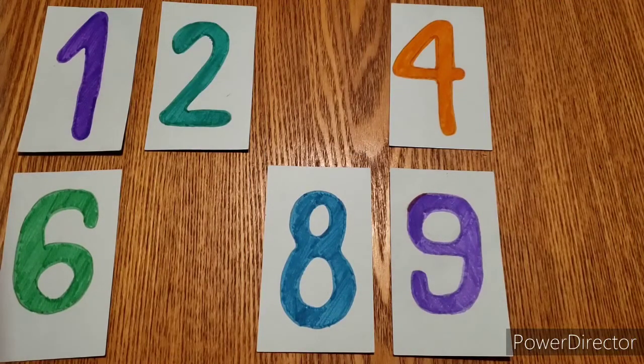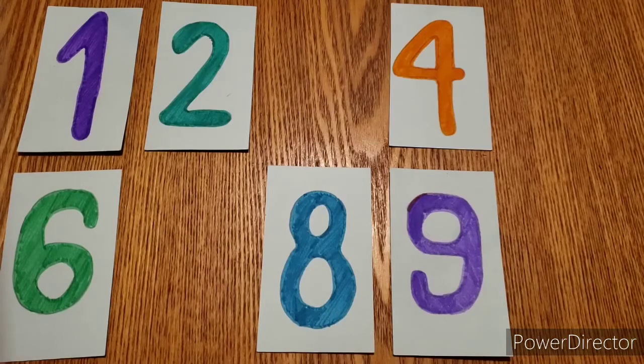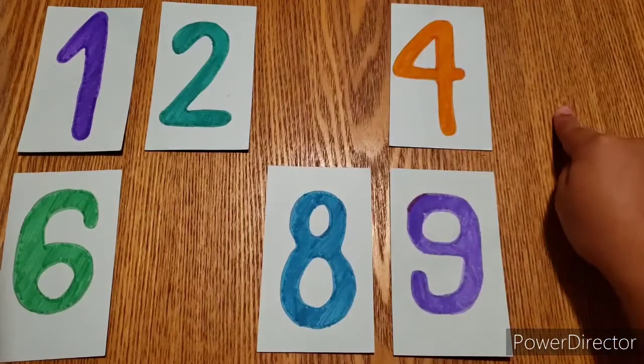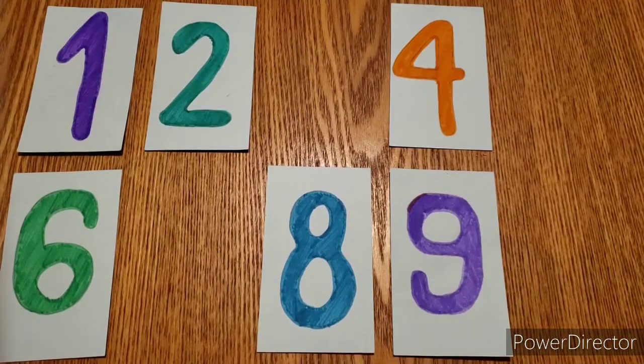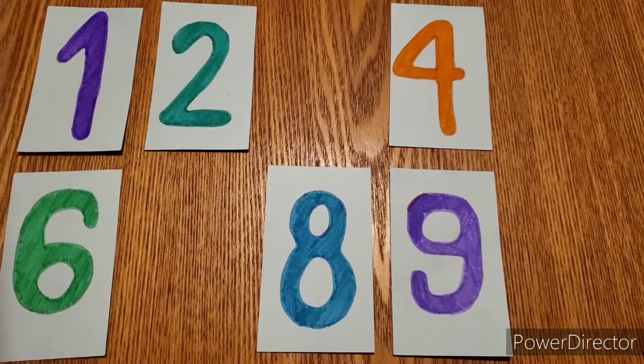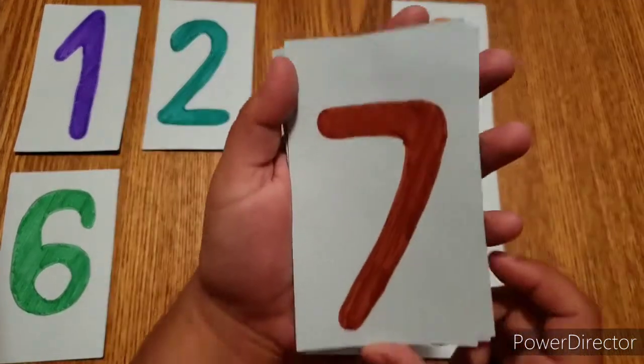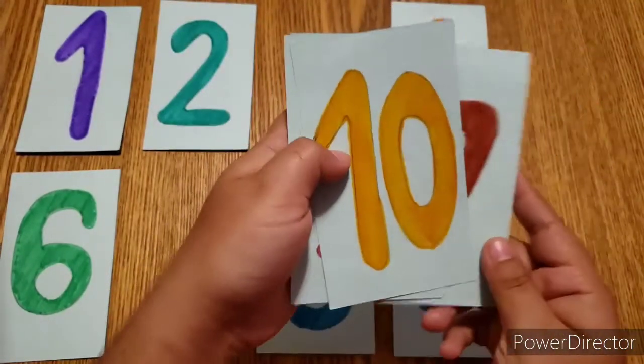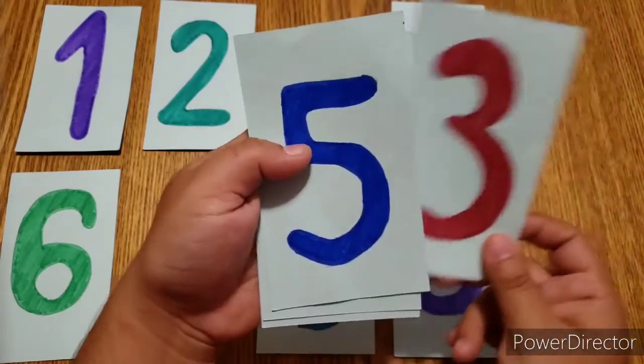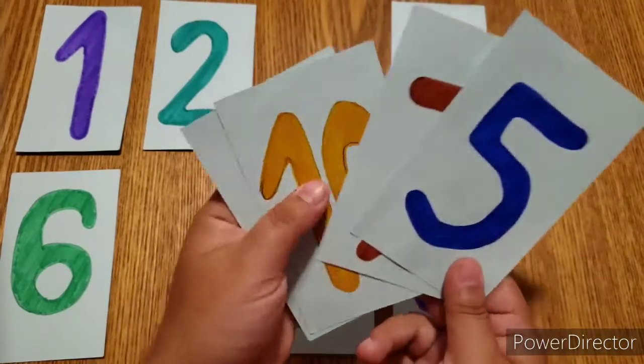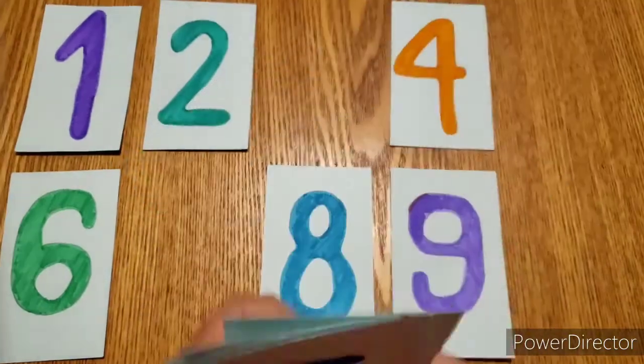Now we have some missing numbers and we need to figure out which number goes here, here, here, here, and here. So we have the number seven, the number ten, the number three, and number five. Here are our missing numbers.